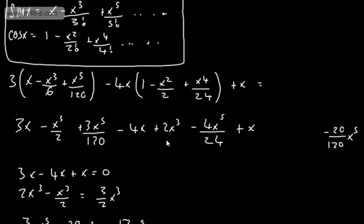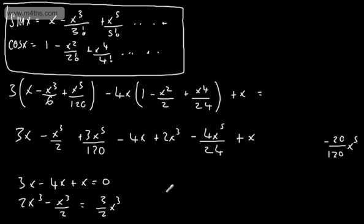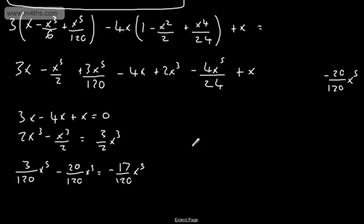So what we can now say is, quite clearly, and that's what they wanted, it is equal now to the following. So 3 over 2 x cubed, then we've got minus 17 over 120 x to the 5th, and so on and so forth.